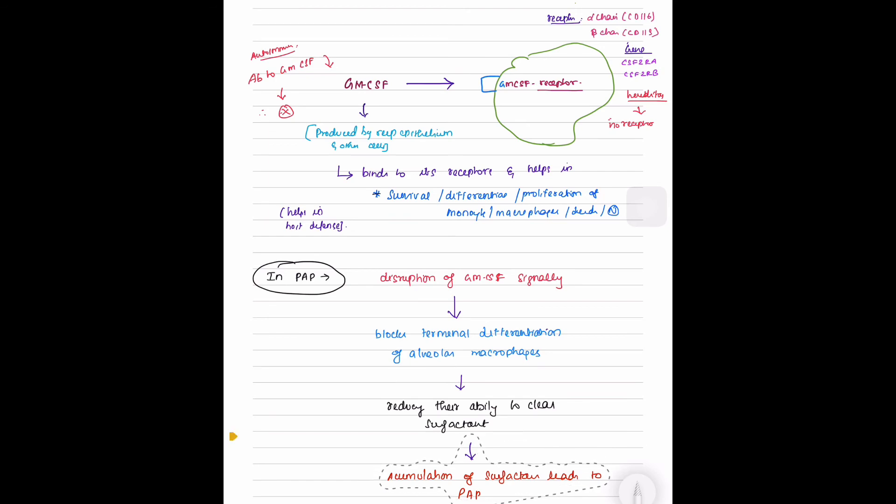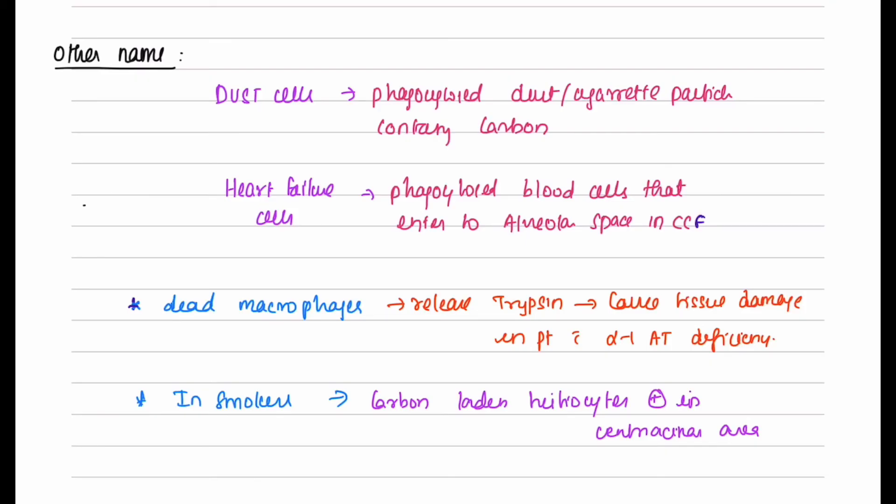Alveolar macrophages are also known as dust cells when they phagocytose dust and cigarette particles containing carbon. They are known as heart failure cells when they phagocytose blood cells that enter into the alveolar space in congestive cardiac failure.